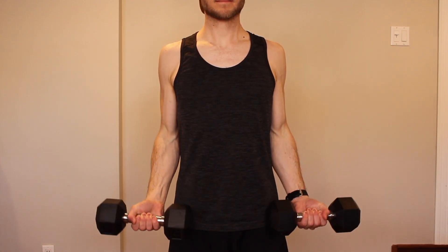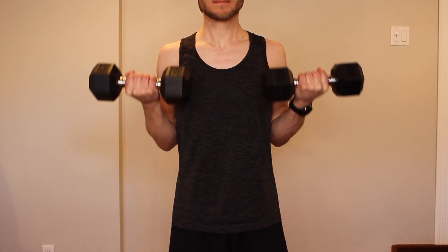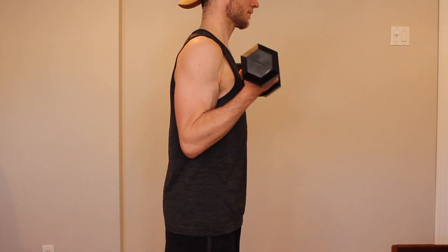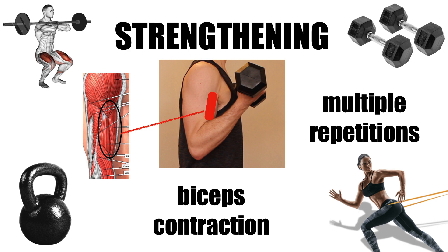The bicep curl is an exercise that involves repetitively bending the elbow by contracting the biceps brachii. The muscle being primarily acted upon is the biceps brachii, and its repetitive contraction is the focus of the exercise, meaning that this is a strengthening exercise for the biceps brachii. Picture what that muscle is doing — it's contracting and shortening to lift the weight against gravity. This repetitive action is going to cause that muscle to become stronger at performing that movement.